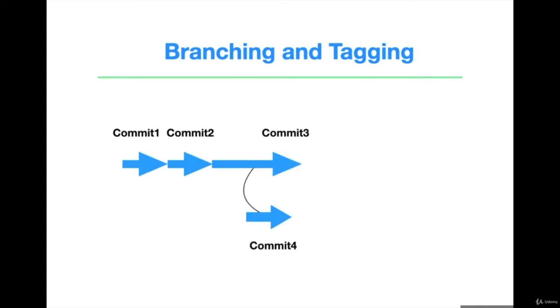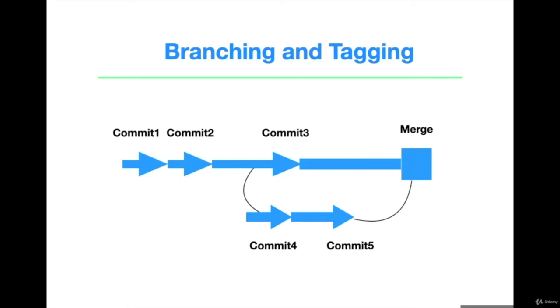Branching and tagging in Git. Master is the default branch in Git. If we have a project where multiple people are working, we have multiple commits. When there is a new feature, we create another branch from the master branch and start work on it. At this point, both branches will have the same code. With work in progress, both branches will move ahead with further commits without affecting each other. This is safe because the person working on the feature branch doesn't want to break the code in the master branch, and finally will merge his changes into master.